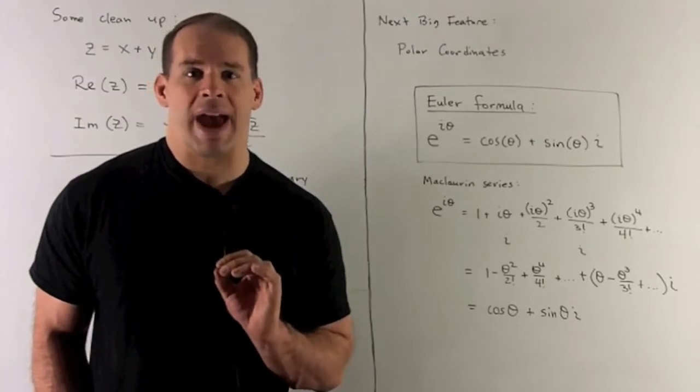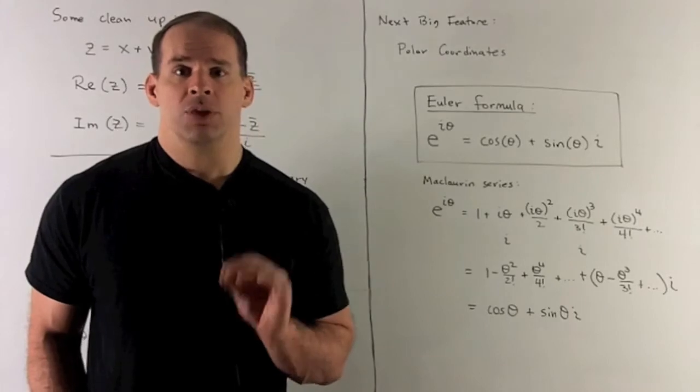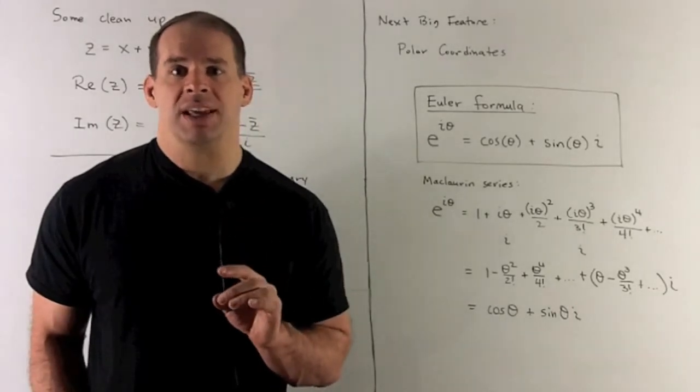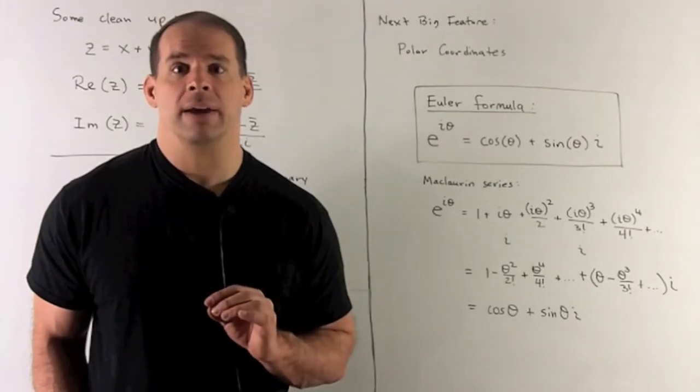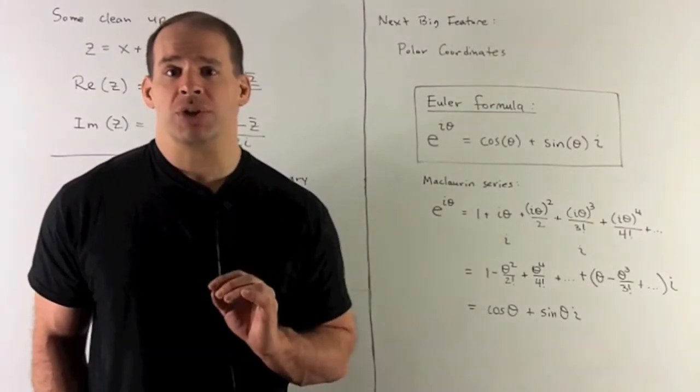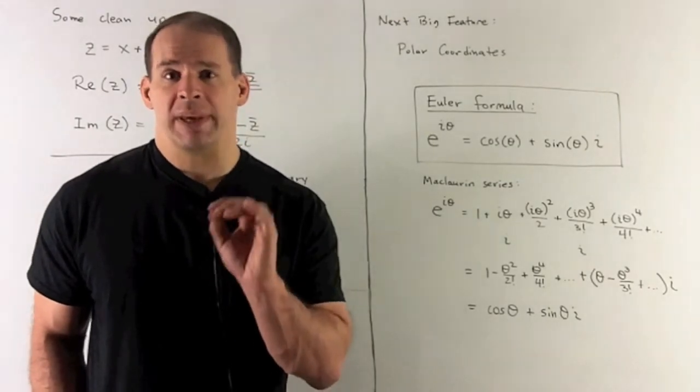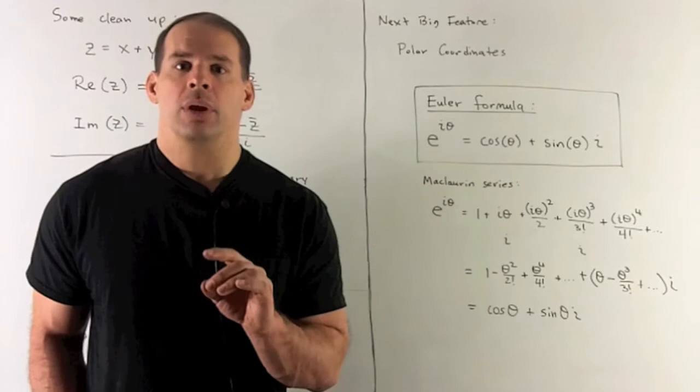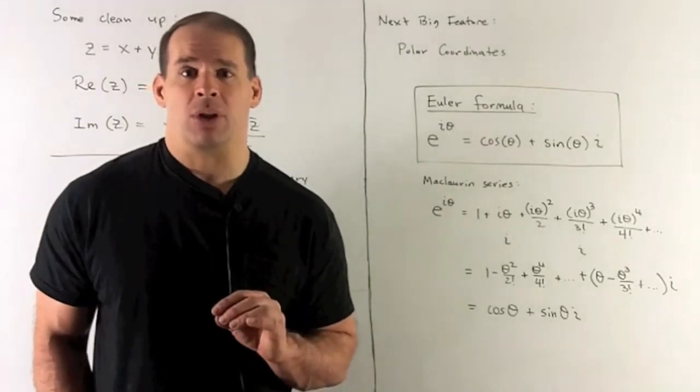The next big feature of complex numbers, and this is the one that's going to impact ODEs, is going to be Euler's formula. So what does this say? This says E to the I theta equals cosine theta plus sine theta times I. We'll give the geometric interpretation of this in a little bit. First, let's show this mechanically.